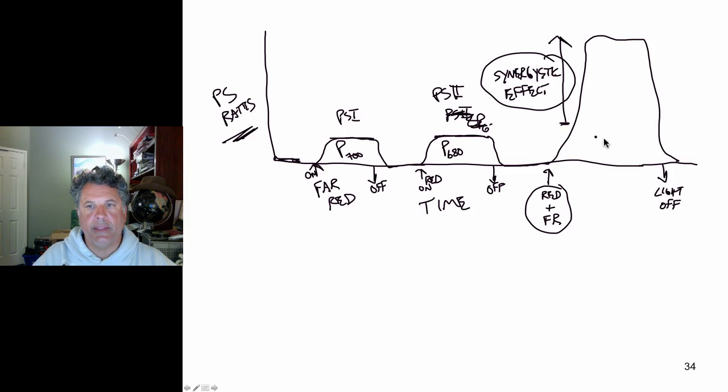So this is a nice demonstration then of both photosystems 1 and 2 acting together to produce photosynthesis in the light-dependent reactions. So of course these are all light-dependent reactions.